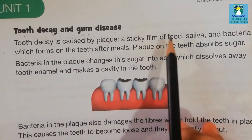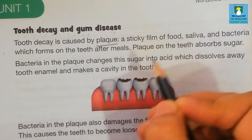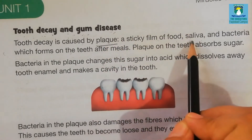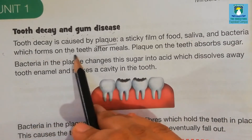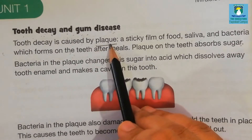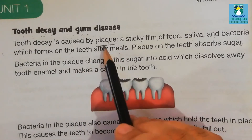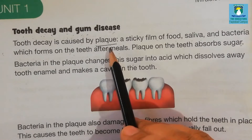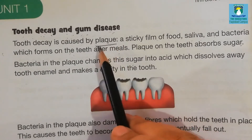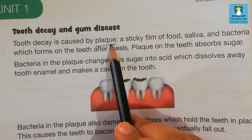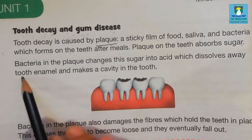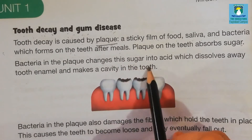Tooth decay is caused by plaque, a sticky film of food. What do you mean by plaque? Plaque is a sticky film of food that contains millions and billions of bacteria, saliva, and bacteria which forms on the teeth after meals. When you take any meal, the remaining part left inside our mouth on our teeth is known as plaque.